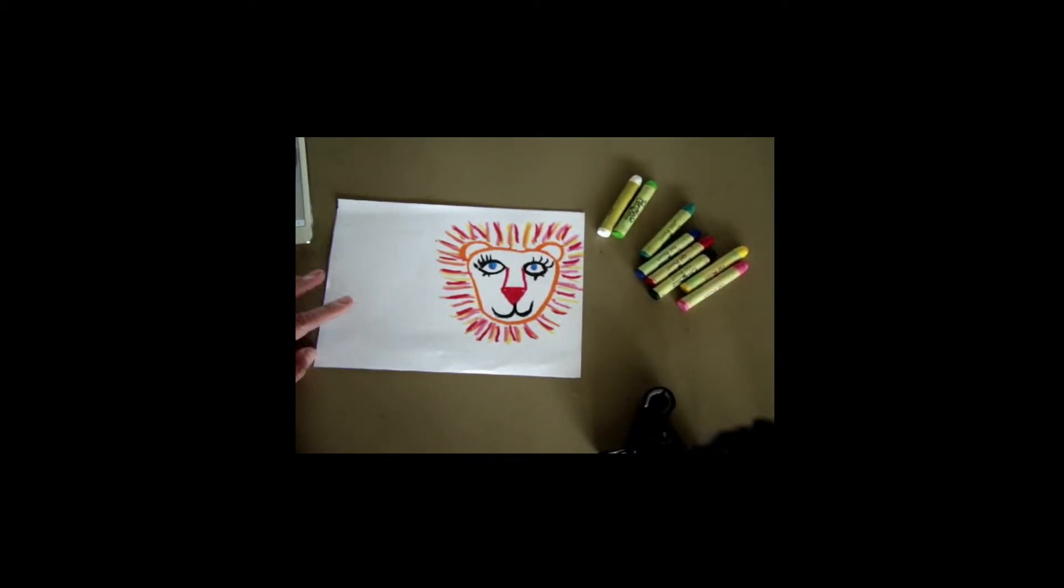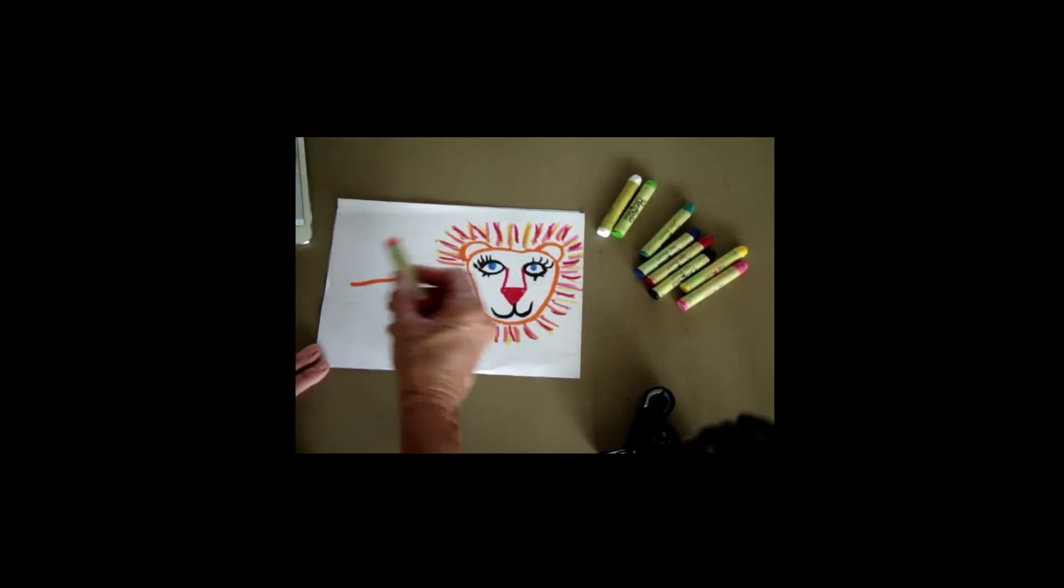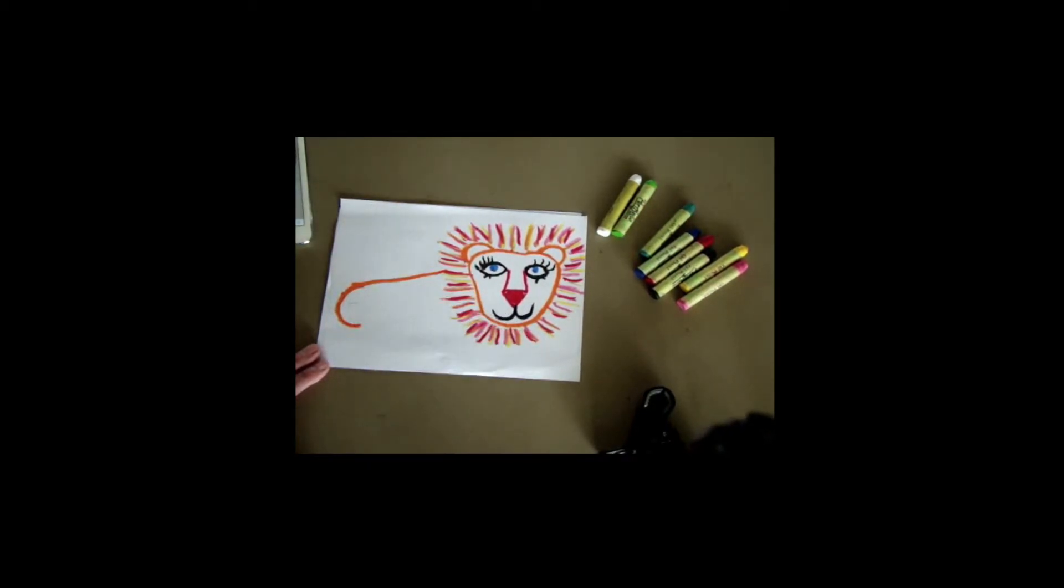Next, we're going to make another laying down line to be the lion's back. It's kind of a diagonal so it starts up high on his mane here and kind of leans down on its way to the other side of the paper. Now, we're going to put a capital C here to go around our lion's bum.